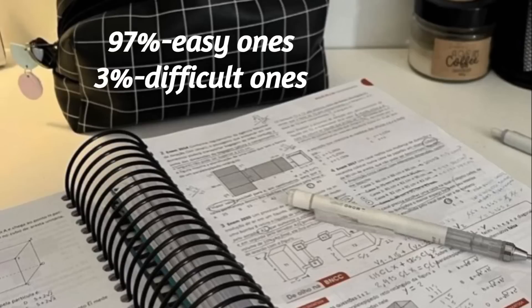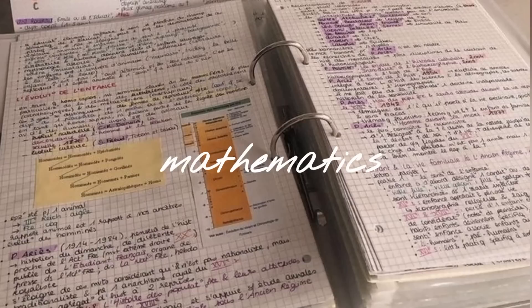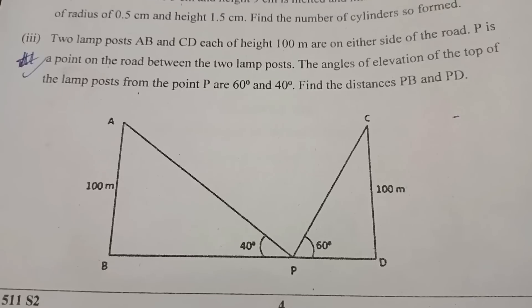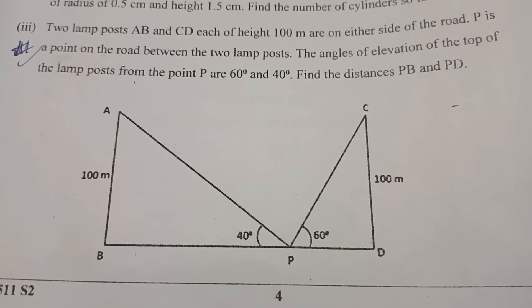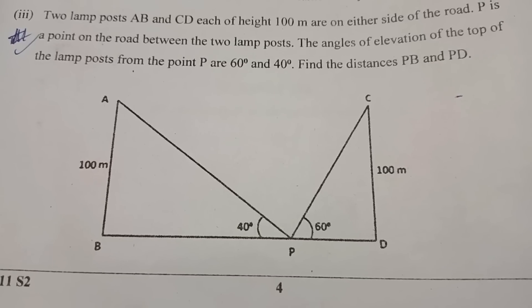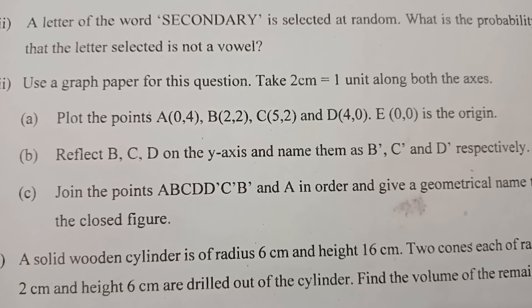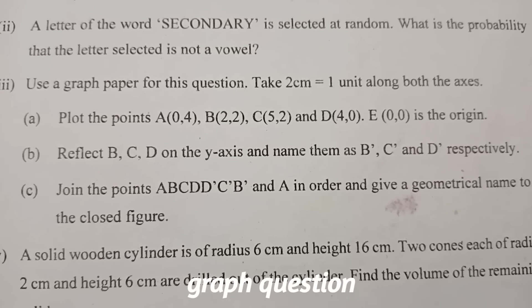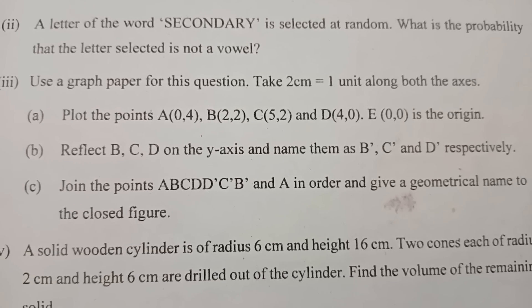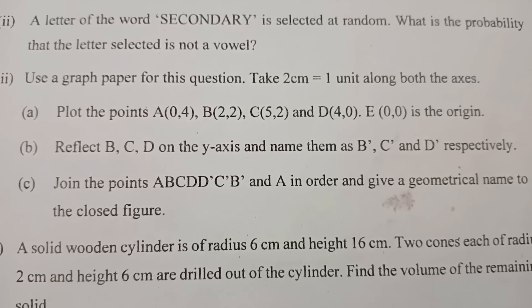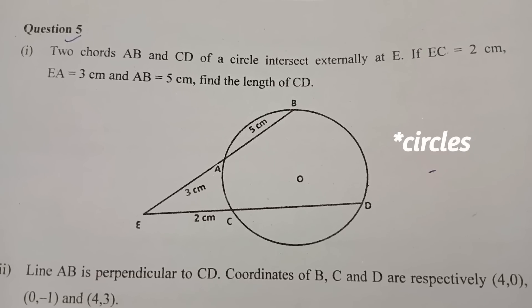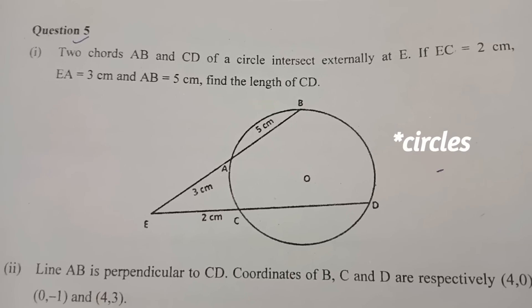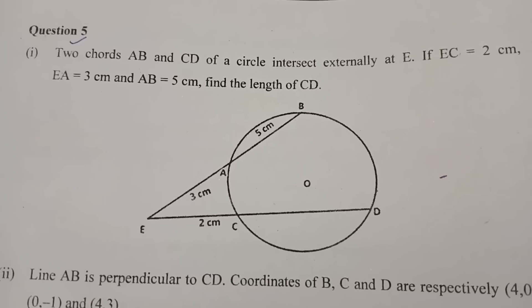We all know that 97% of questions are easy ones and 3% are difficult ones. Let's start with Mathematics. This question is from our board paper and it was from the chapter heights and distances. A similar question will not come, but I'm just telling you that these kinds of questions can come — like this is a very simple question, so you can solve it very easily. Then we have the graph question, which usually comes in this format: in the first part we have to plot, in the second we have to reflect, and in the third we have to join and make a figure. And tangents, chords — these types of questions often come, especially in the circles part.